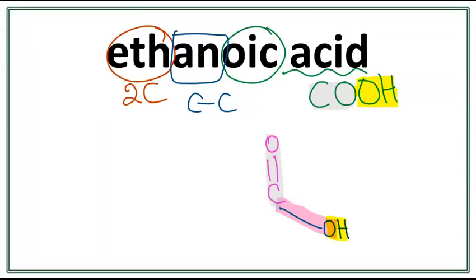So let's draw the parent chain. Remember, the carbon in the COOH is always your first carbon. So this is our first carbon. Now, we need to draw another carbon because we only have two carbons in the parent chain. So this is the first carbon right here, and this is the second carbon right here.